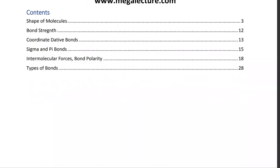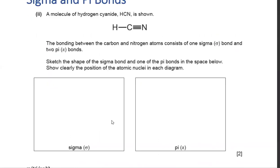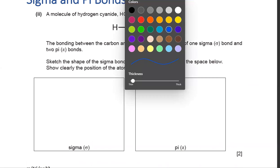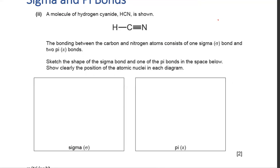Now for sigma and pi bonds: when carbon makes bonds to just two atoms, that is sp hybridization. The carbon has two sp hybrid orbitals pointing in opposite directions and two remaining p orbitals. Those sp hybrid orbitals are the ones that bond to hydrogen. The overlap between carbon's sp orbital and hydrogen's s orbital forms a sigma bond.